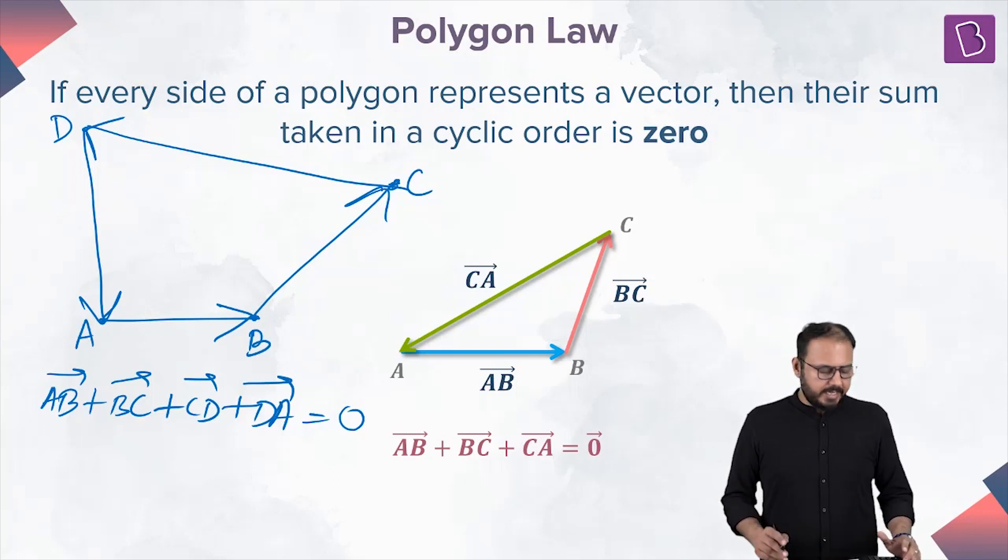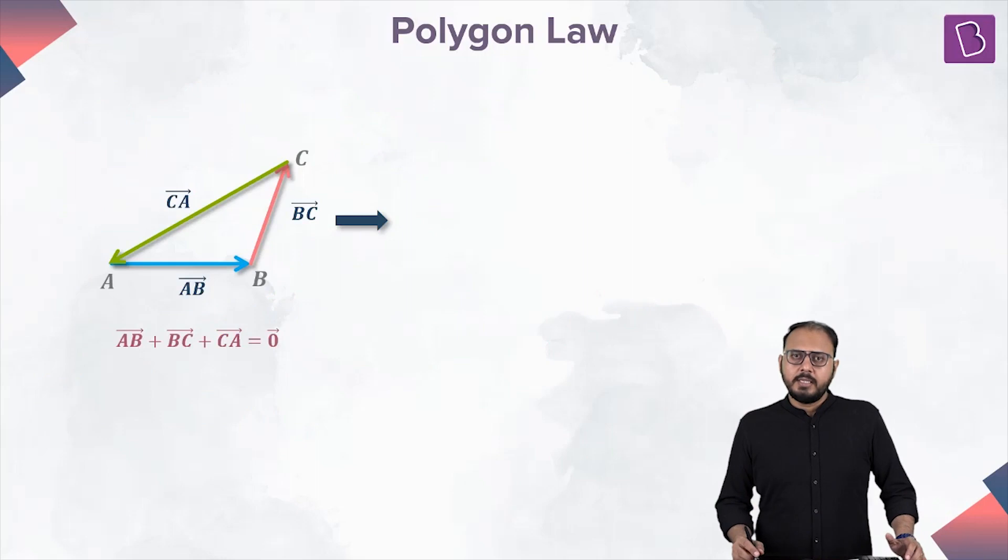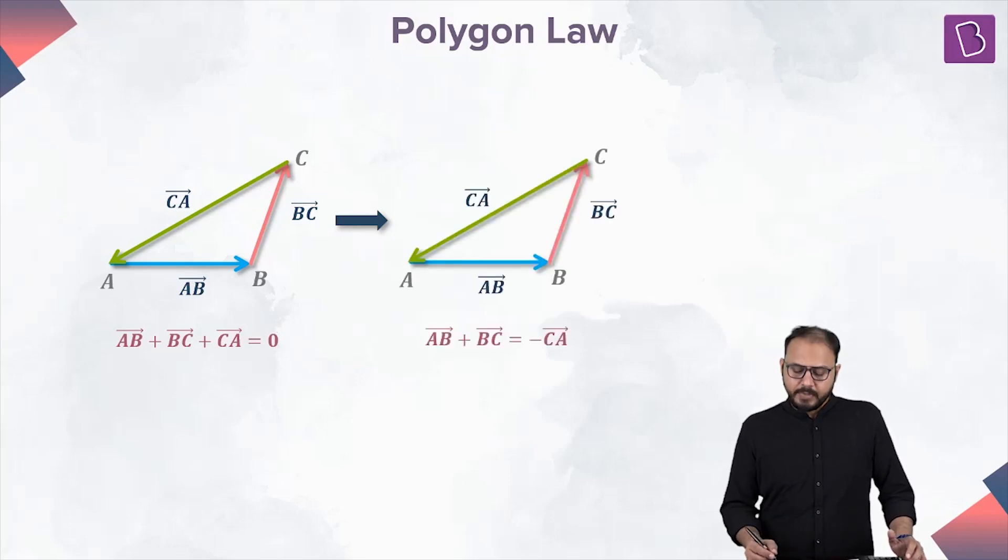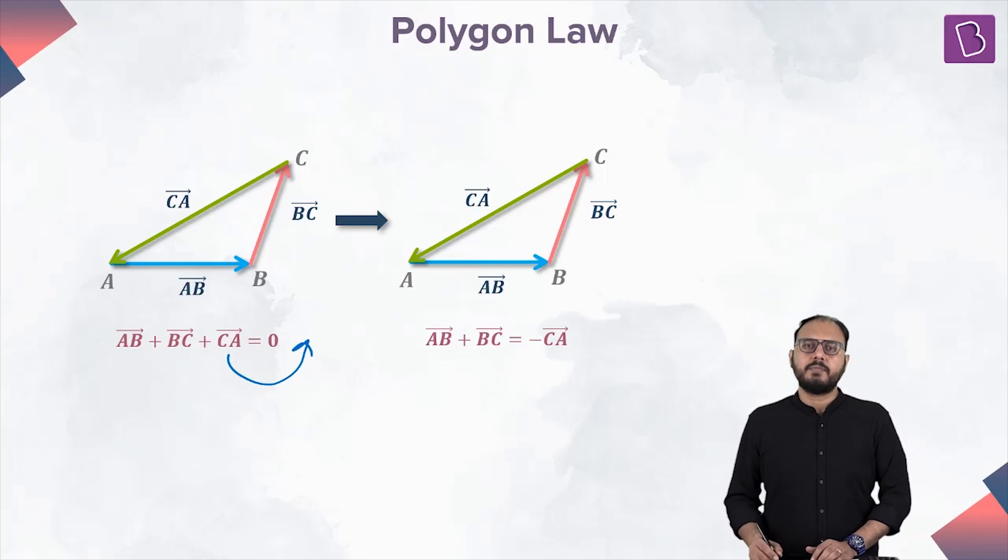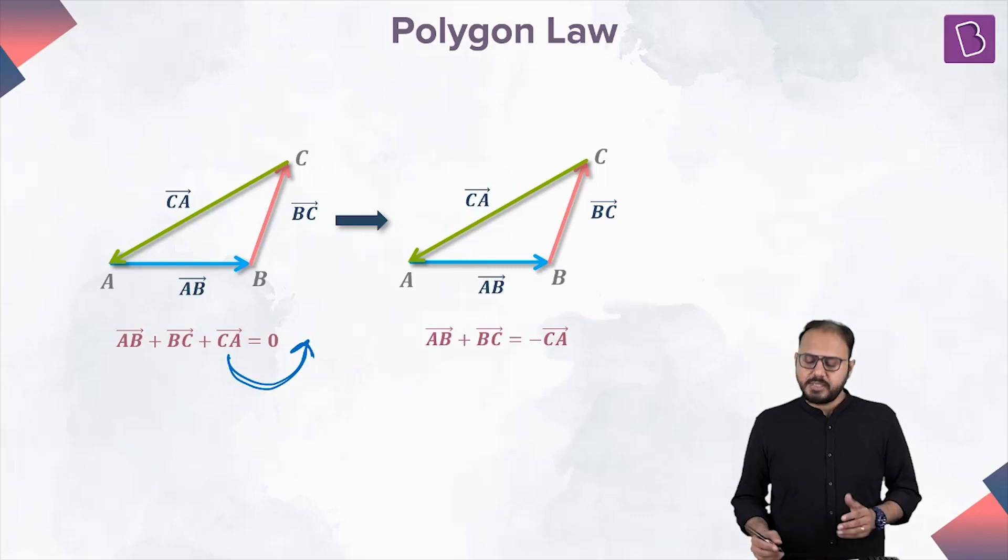AB plus BC plus CA is equal to zero. So AB plus BC plus CA equal to zero is the polygon law. AB plus BC is equal to minus CA. What did I just do? I took the CA that side. Am I allowed to do that? Of course I am allowed to do that. AB plus BC plus CA is equal to zero. This is a statement of polygon law. I took CA term to the RHS. If I take it to the RHS, the sign changes. It becomes minus CA.